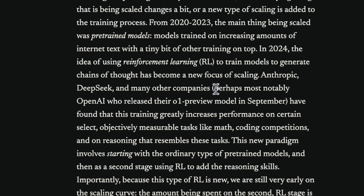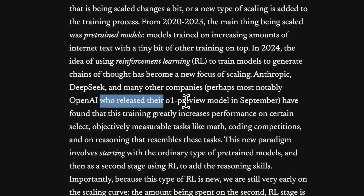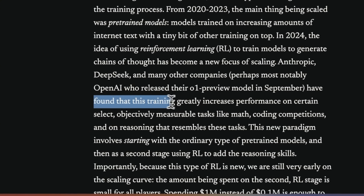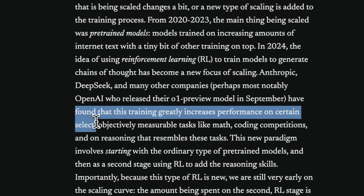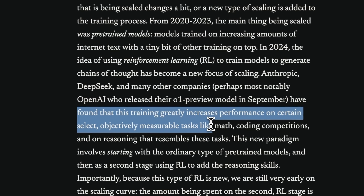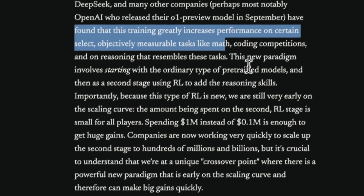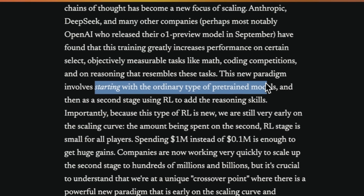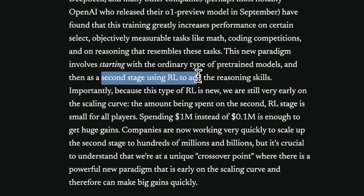Anthropic, DeepSeek, and notably OpenAI, who released the O1 preview model, have found this training greatly increases performance on certain select objectively measurable tasks like math and coding. With this new paradigm, you basically start with ordinary pre-training, and then the second stage is reinforcement learning. There are different reinforcement learning techniques — DeepSeek came up with a very innovative technique, along with training in 8-bit floating point precision. This seems to have really enabled them to squeeze a lot of performance from not only their V3, but also the R1 models.